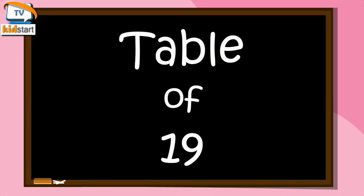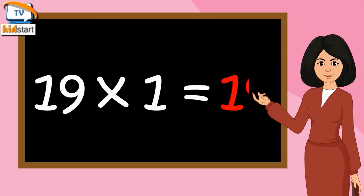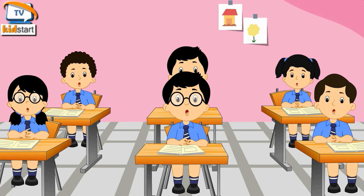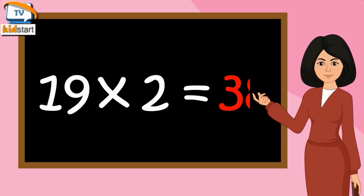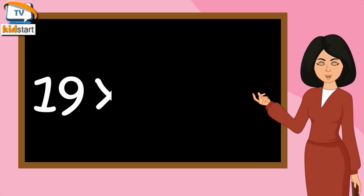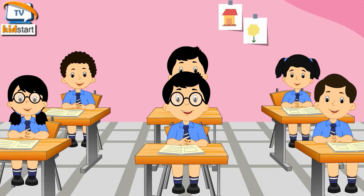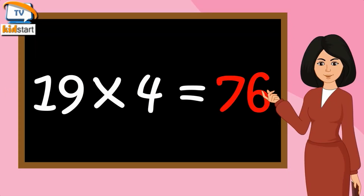Table of 19. 19 ones are 19. 19 twos are 38. 19 threes are 57. 19 fours are 76.